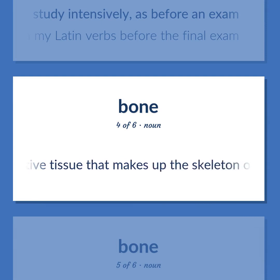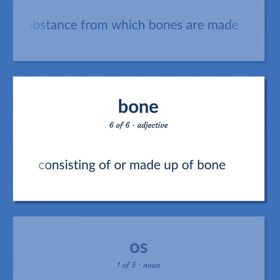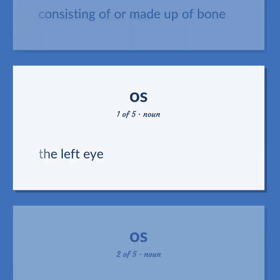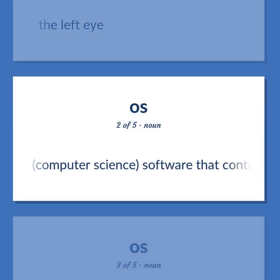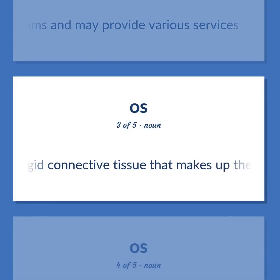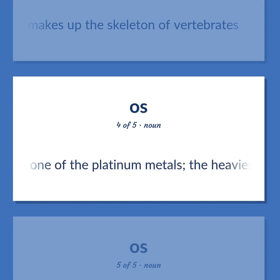Rigid connective tissue that makes up the skeleton of vertebrates. The porous calcified substance from which bones are made. Consisting of or made up of bone. The left eye. Computer science: software that controls the execution of computer programs and may provide various services. A hard, brittle, blue-gray or blue-black metallic element that is one of the platinum metals — the heaviest metal known.